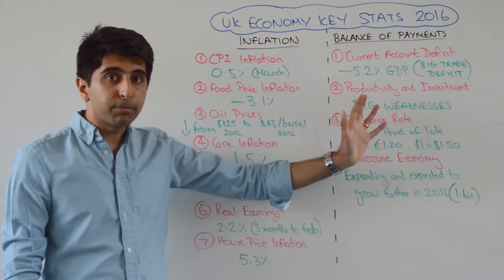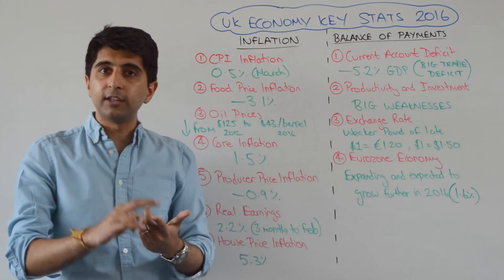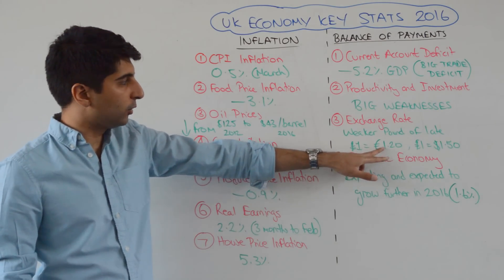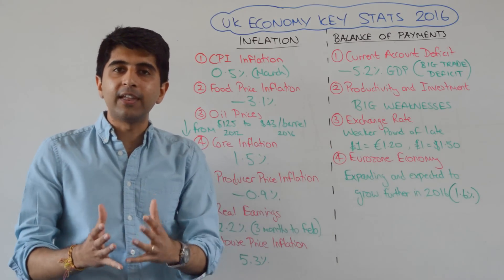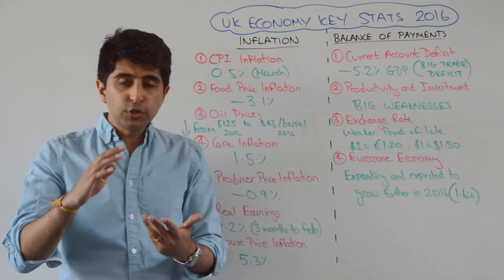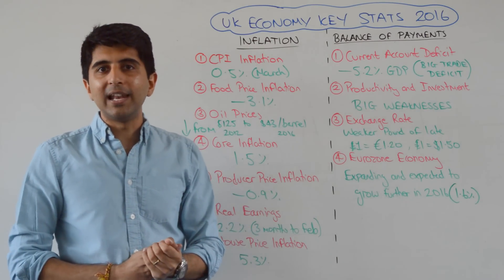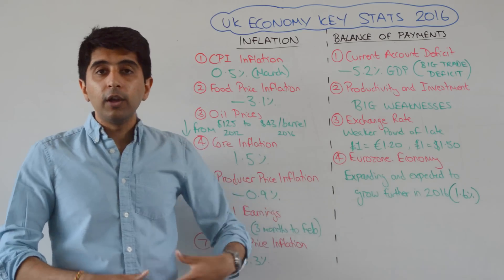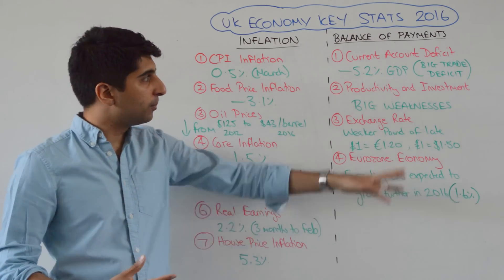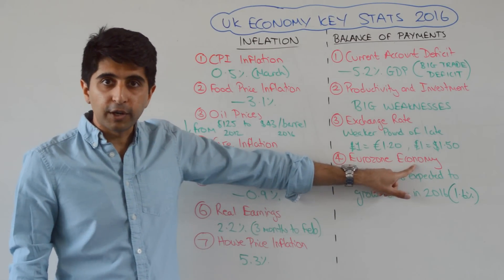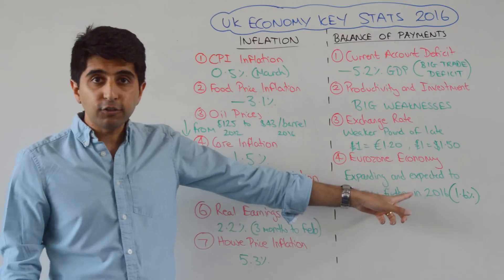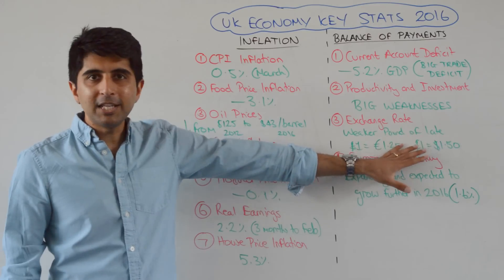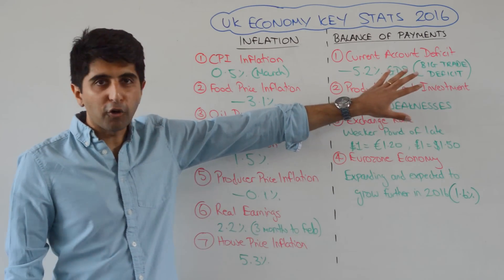However, there are signs this may improve because the pound is becoming weaker against major currencies like the euro and the dollar. Currently, one pound equals €1.20 and one pound equals $1.50 — much weaker than it has been of late. That is again due to worries over what might happen if the UK leaves the European Union. With a weaker pound, our exports become cheaper, which should help improve our trade deficit, especially if the eurozone economy — our biggest trading partner — continues to grow with expected growth rates of 1.6%.